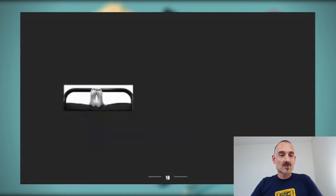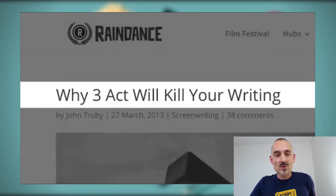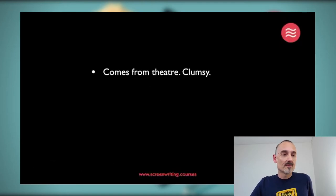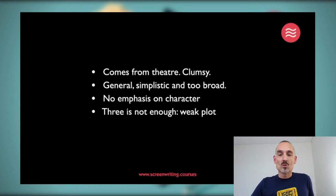Aristotle's incline is really not about acts — it's about a beginning, then action with increasing complications, and then a denouement at the end. You can see structure, even the three-act structure, everywhere. But then you see articles like 'Why the Three-Act Structure Will Kill Your Writing.' The argument is it never worked: it comes from theater, it's clumsy, general, simplistic, too broad, there's no emphasis on character, three is not enough, it gives you a weak plot, and it's just downright arbitrary. And I actually agree with quite a few of those points.